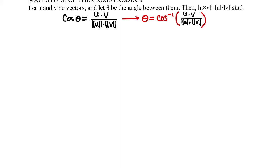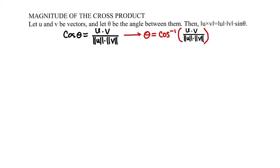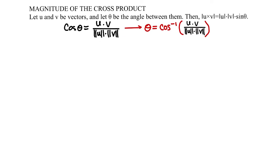In this video, we're going to talk about the magnitude of the cross product. We're looking at vectors u and v, and theta is the angle between them.